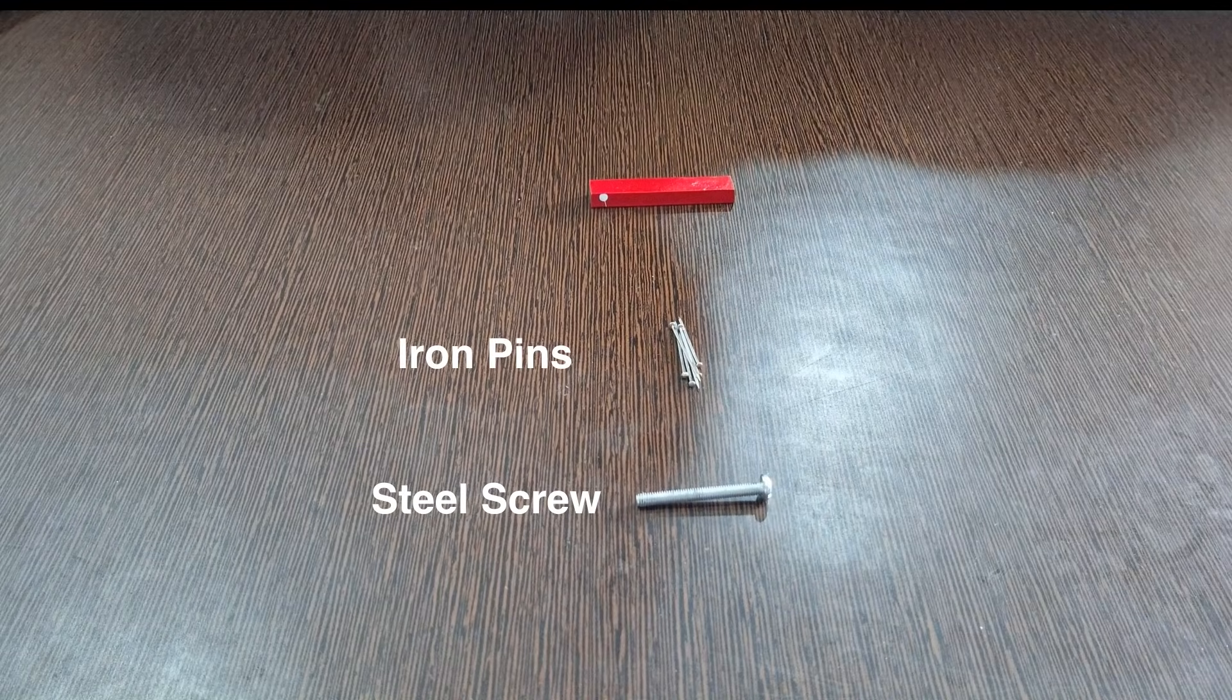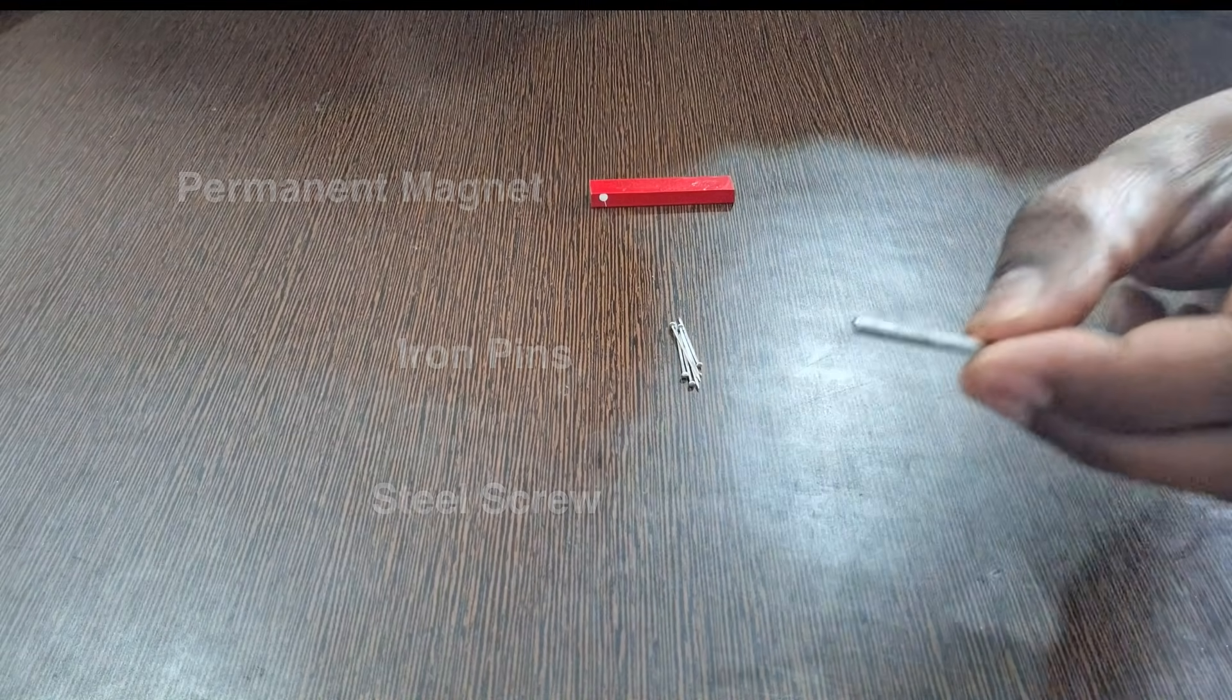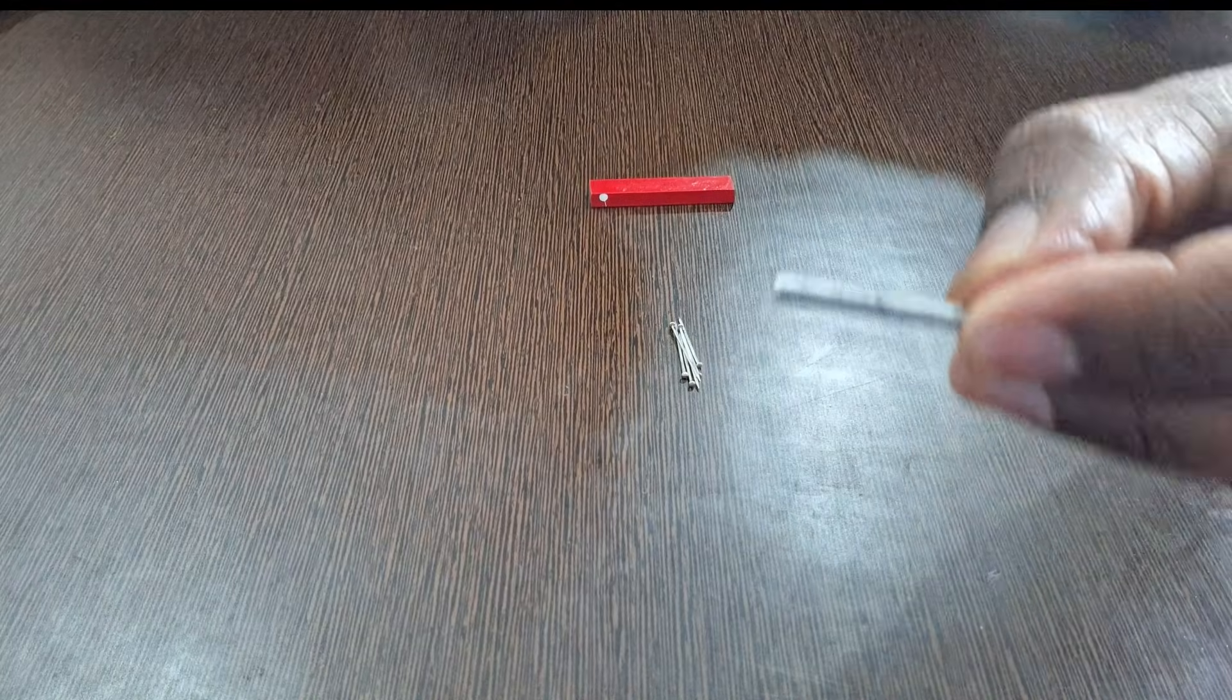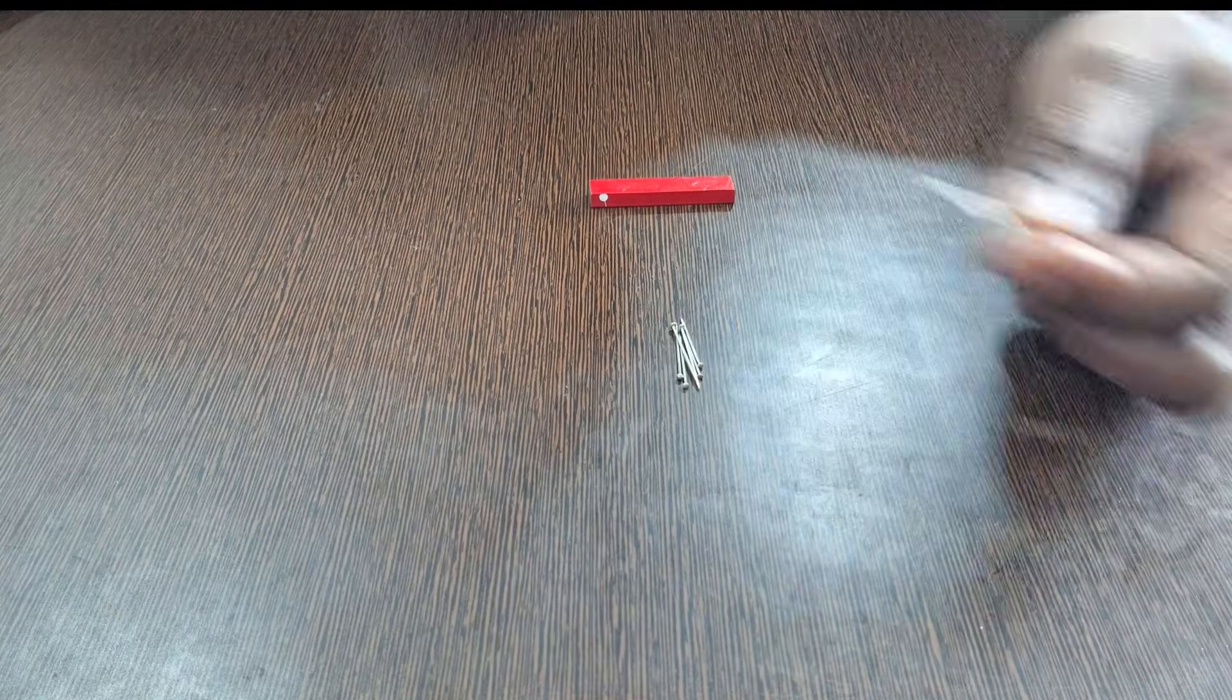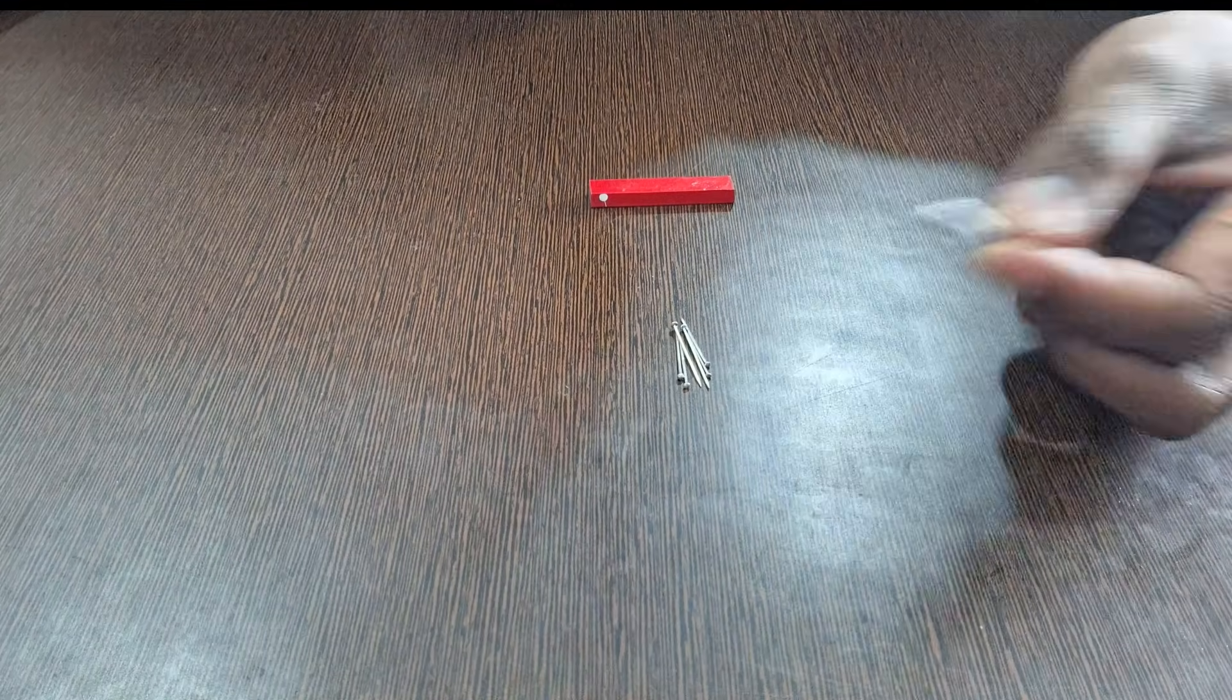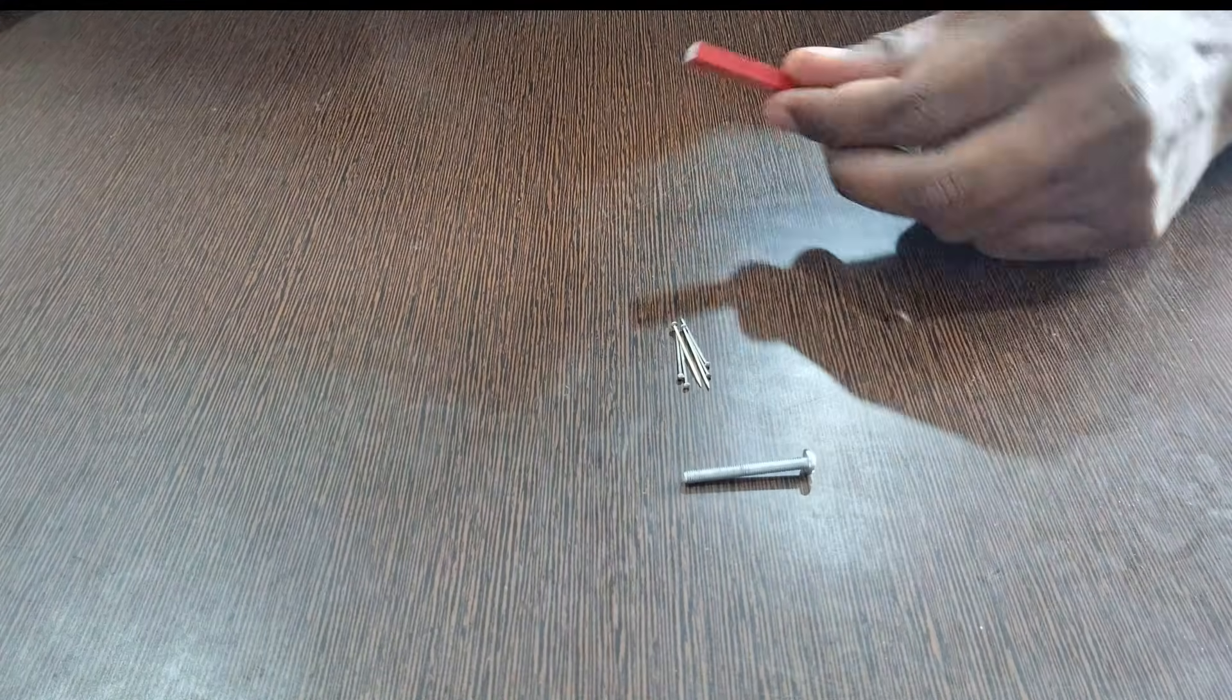In this video, we have a steel screw, some iron pins, and a magnet. When we take the steel screw and check if it can attract the iron pins, it's clear that it cannot. The steel screw does not have magnetic properties.